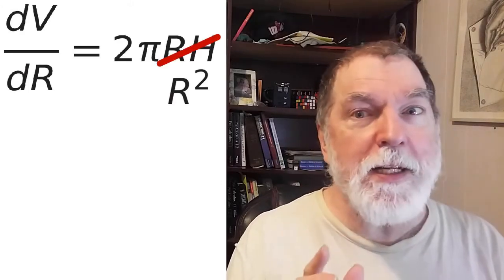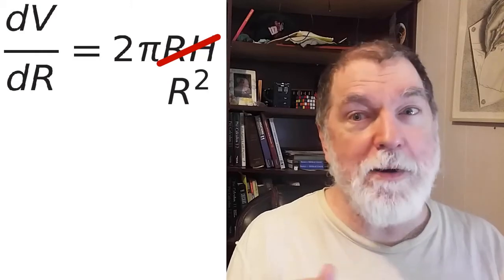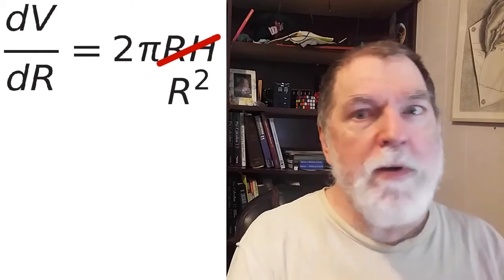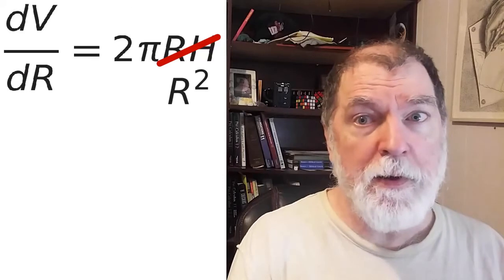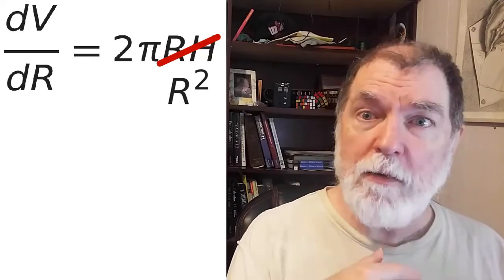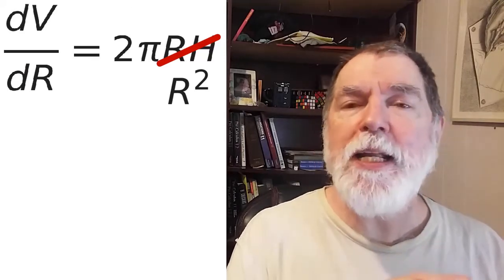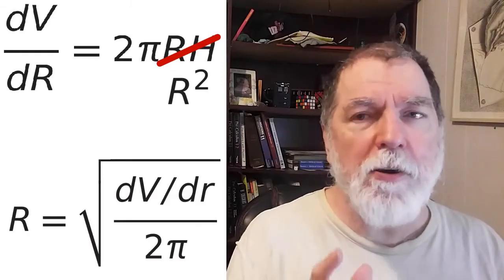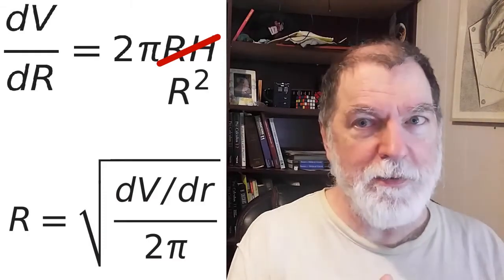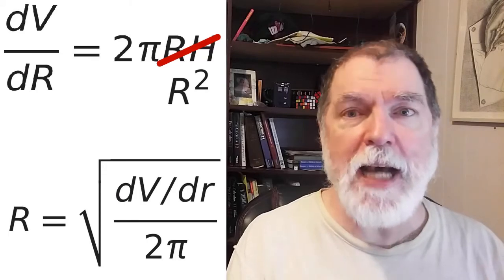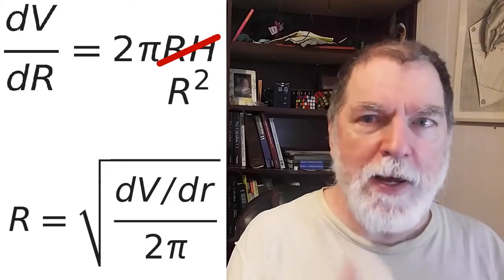So we can rewrite this as 2 pi R squared. This time, we've got dV by dR, and we're looking for R. So we want to rewrite this equation in terms of R. Then, once we've done that, we plug in the values that we know.